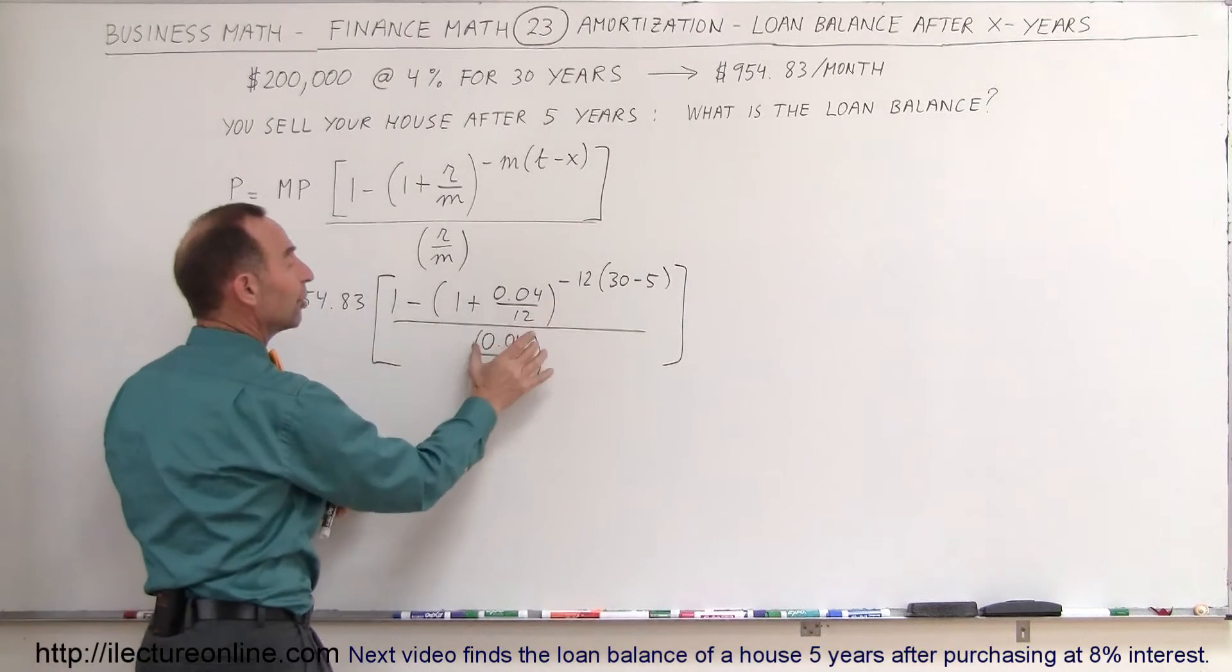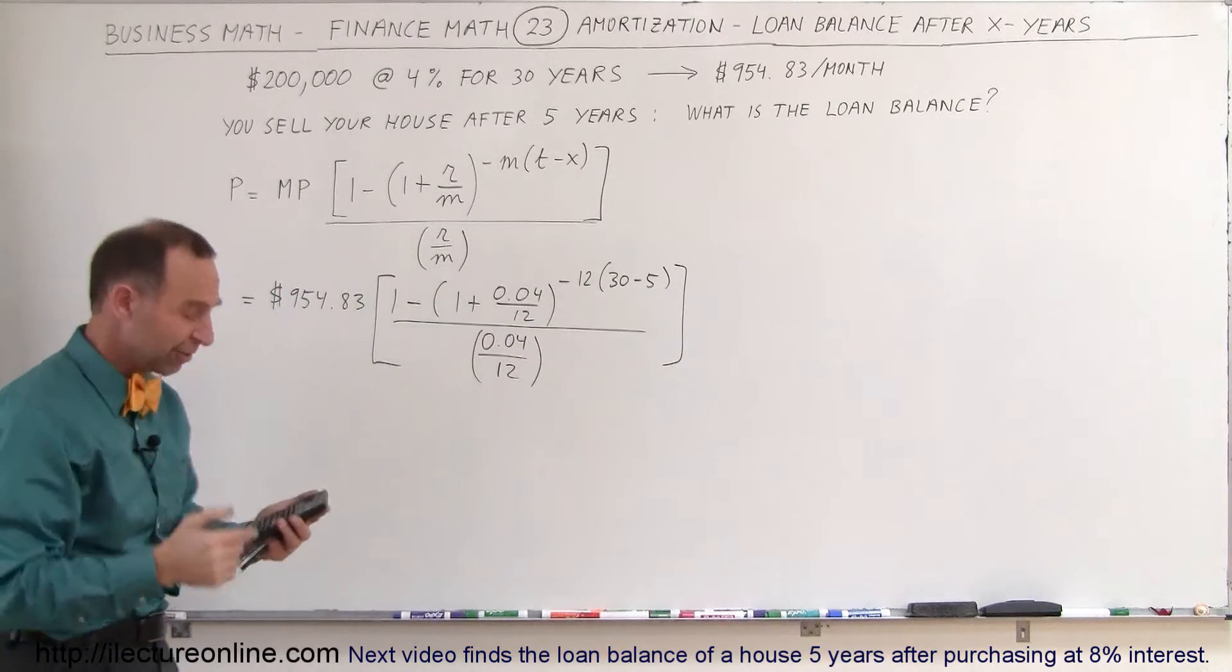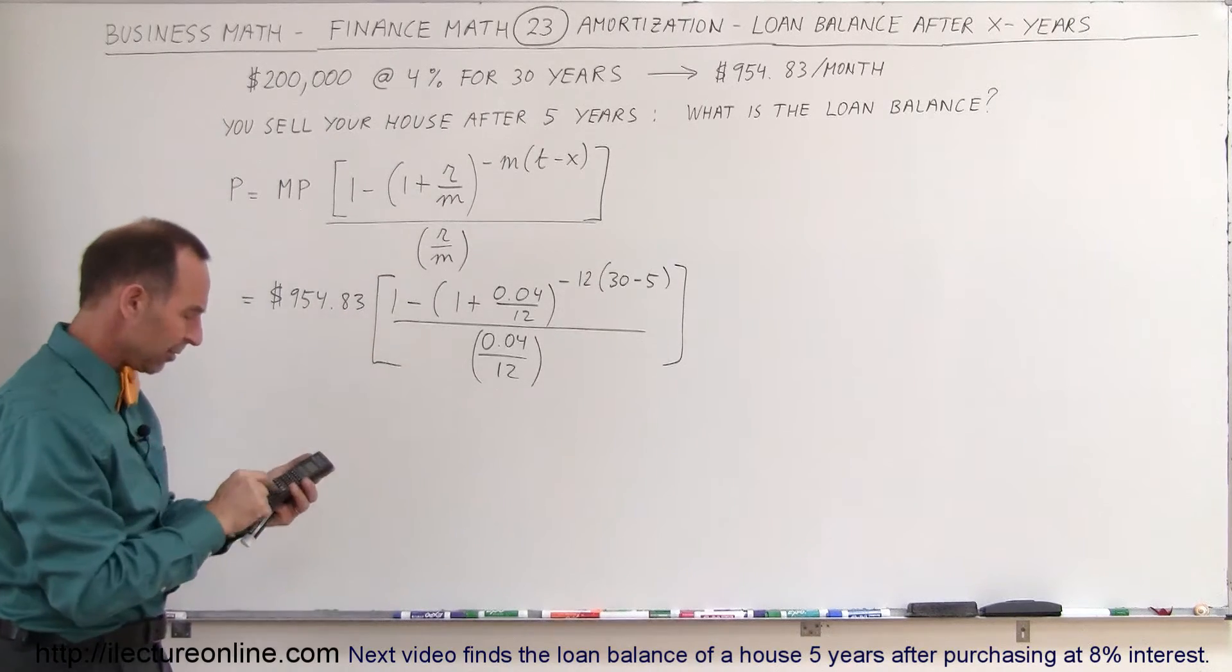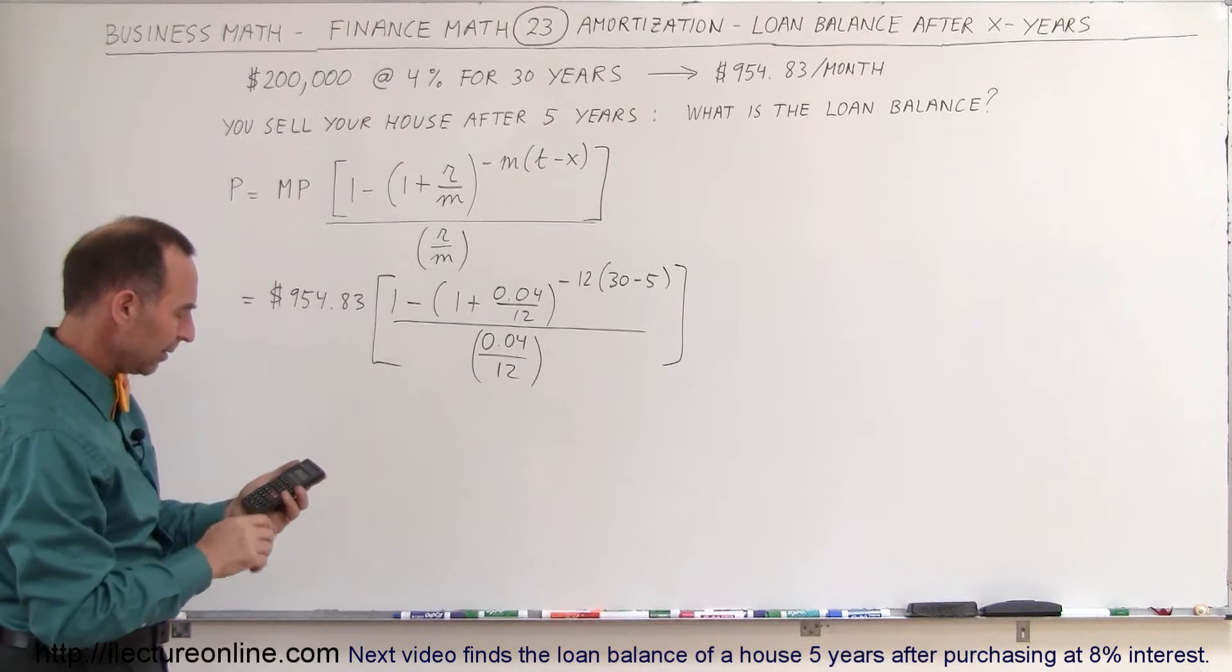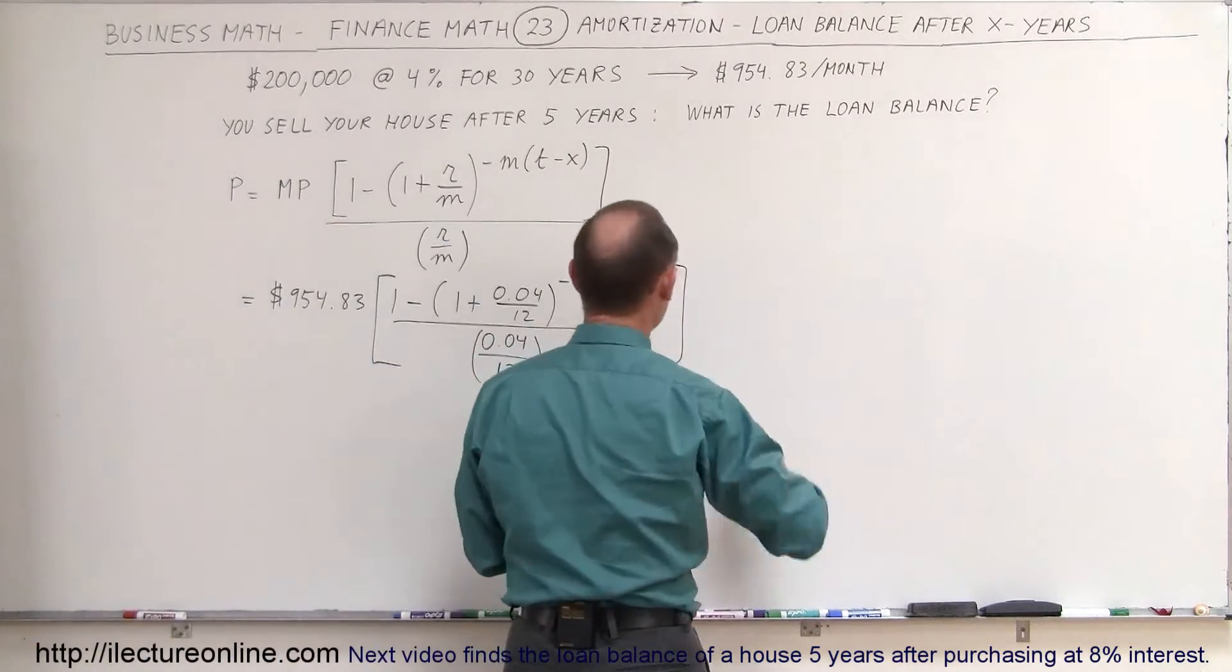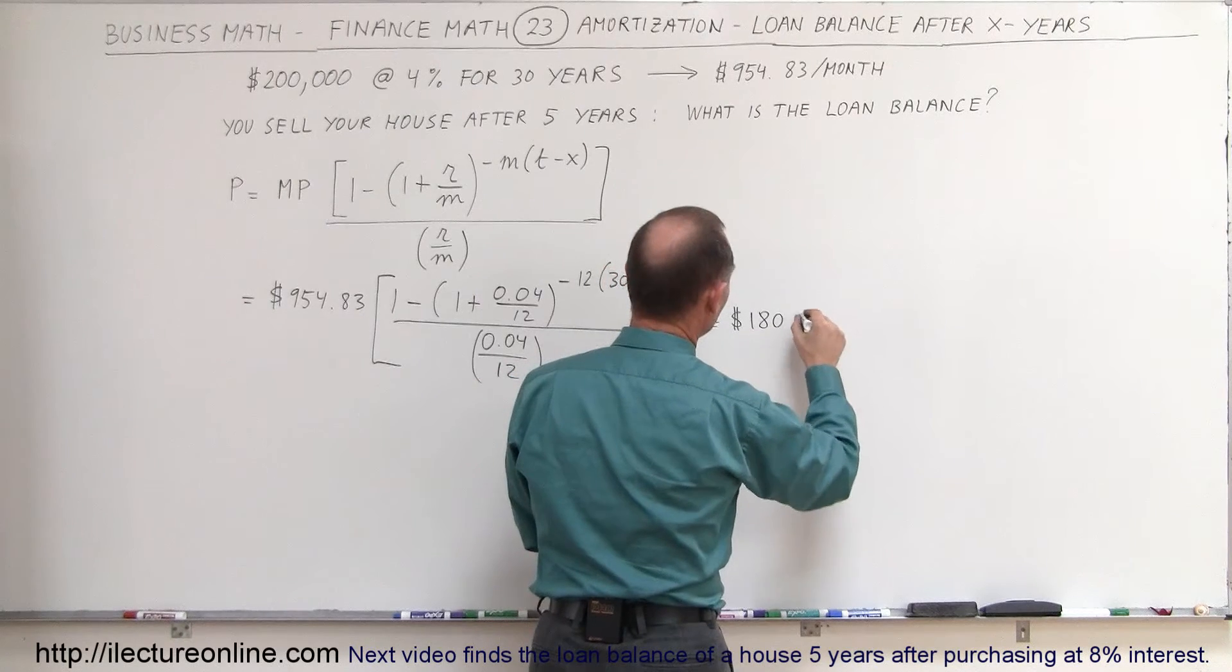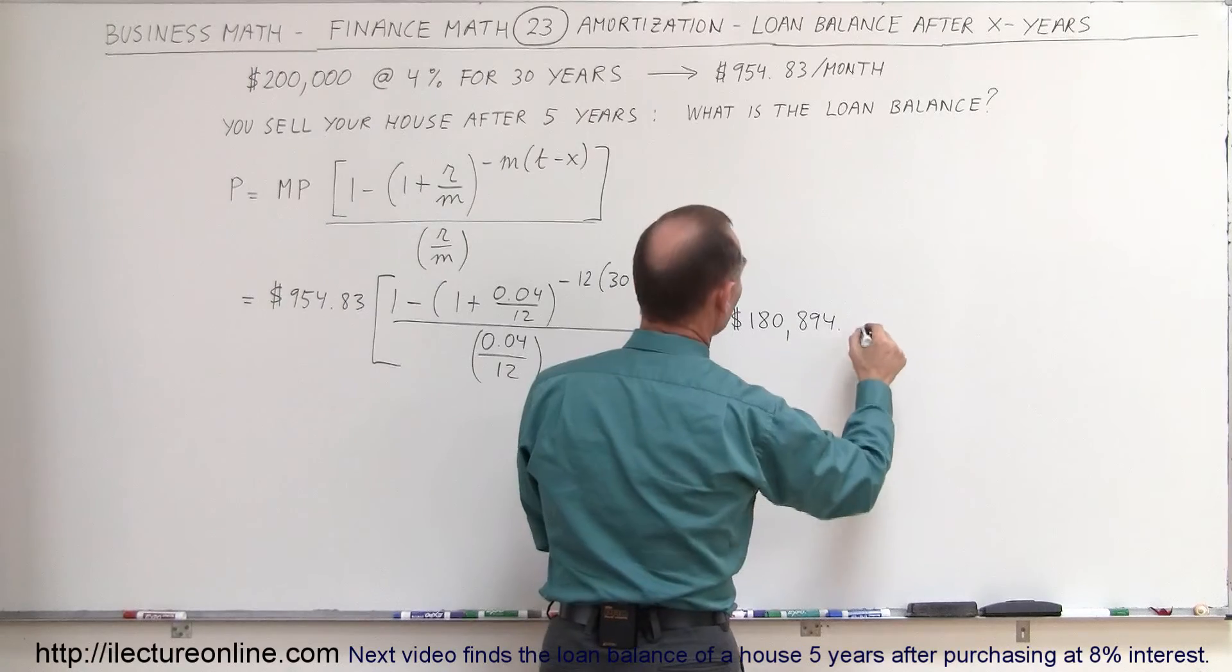We then multiply times 12 and divide by 0.04, because dividing by a fraction is multiplying by its inverse. So times 12, divided by 0.04. And then we multiply the monthly payment, 954.83. And that will give us the principal remaining after five years of payment would be $180,894.91.